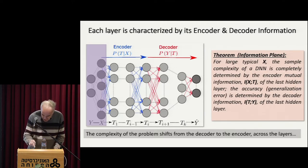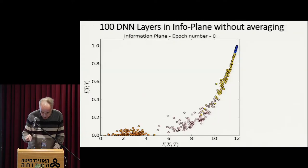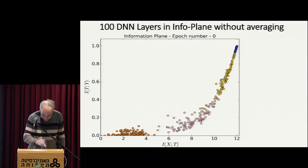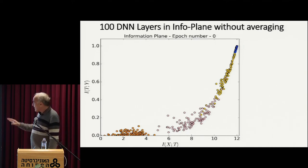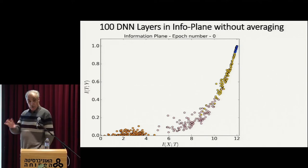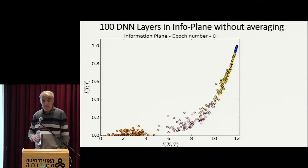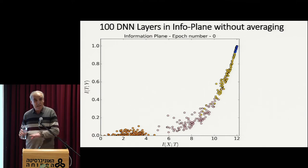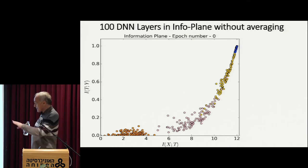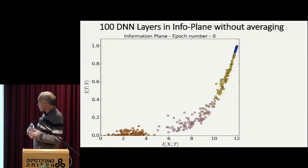Before I argue why this is true, I just want to show you this very famous movie. In the last year it became very popular. This is the information plane. It's a simulation of a small network, but I argue this is the typical picture you see in even large networks. Many people tried it in the last year and this is basically agreed to be the type of picture you see.